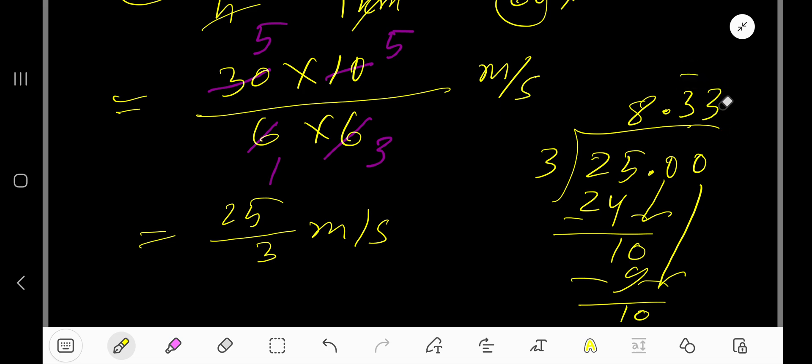So you can place a bar. 8.3 bar meters per second is our answer.